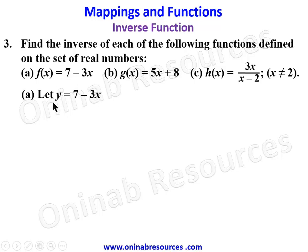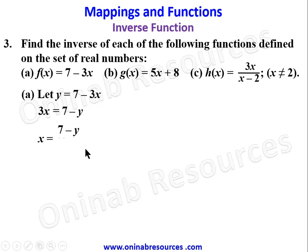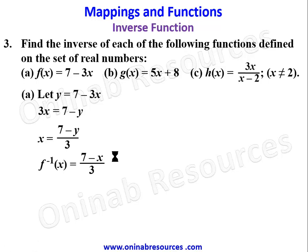Starting from part (a), we let y = 7 - 3x. Making x the subject: bring 3x to the left (it becomes positive) and take y to the right (it becomes -y), giving 3x = 7 - y. Dividing both sides by 3: x = (7 - y)/3. Therefore f⁻¹(x) = (7 - x)/3.